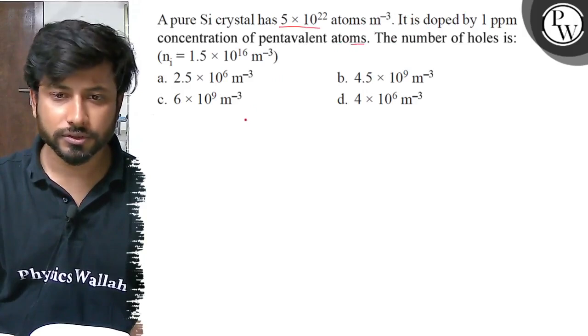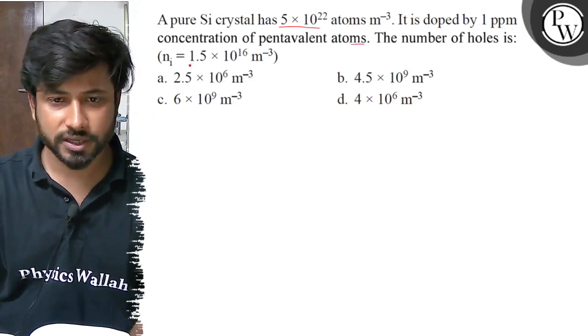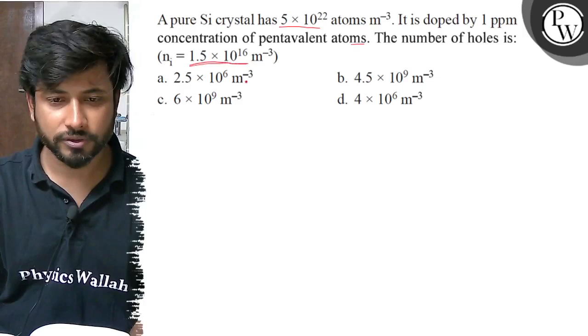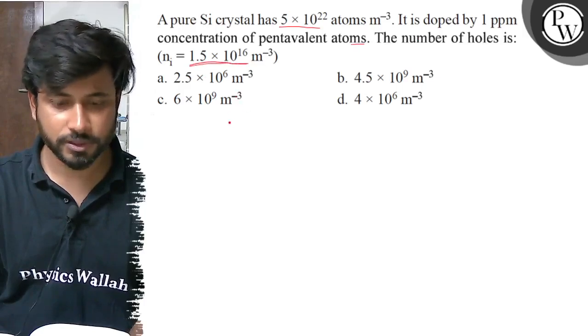Okay, here our intrinsic carrier concentration nᵢ is 1.5 × 10¹⁶ per meter cubed.